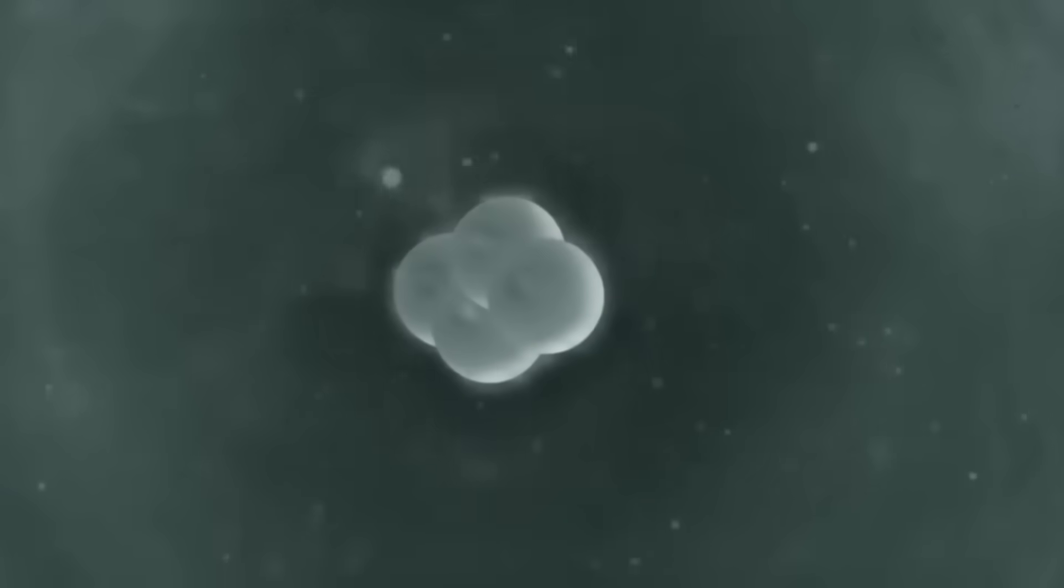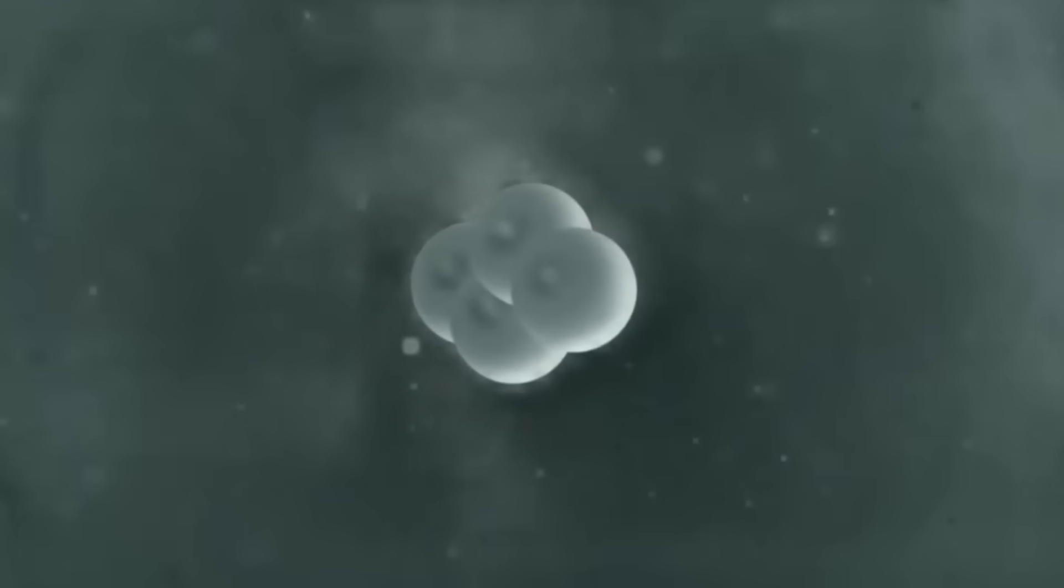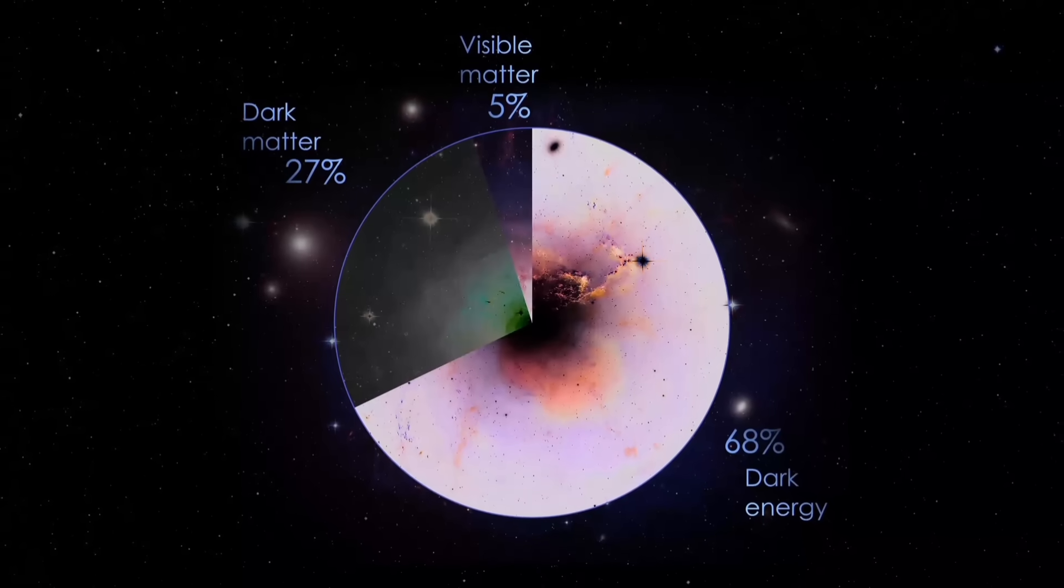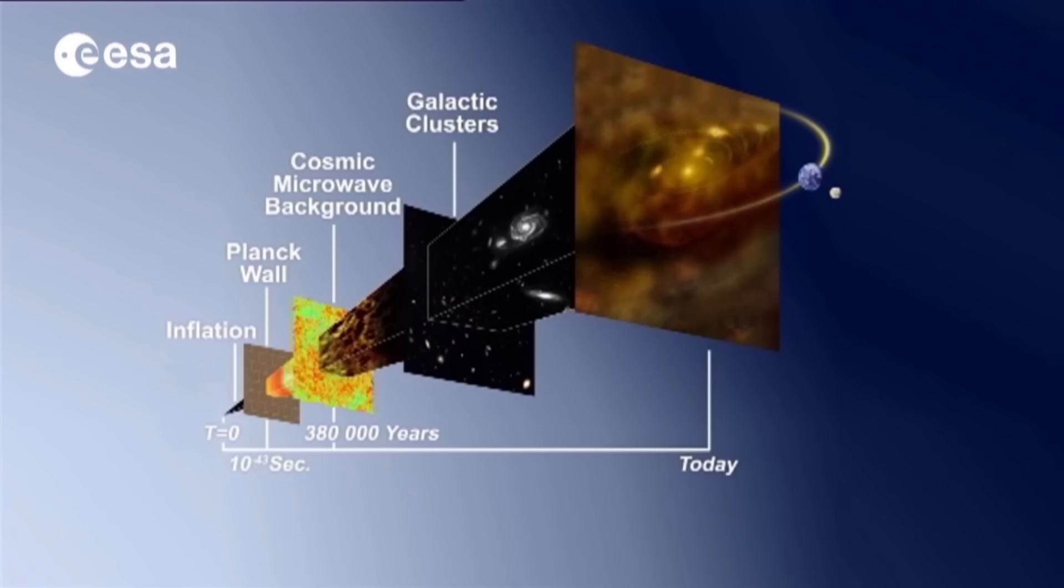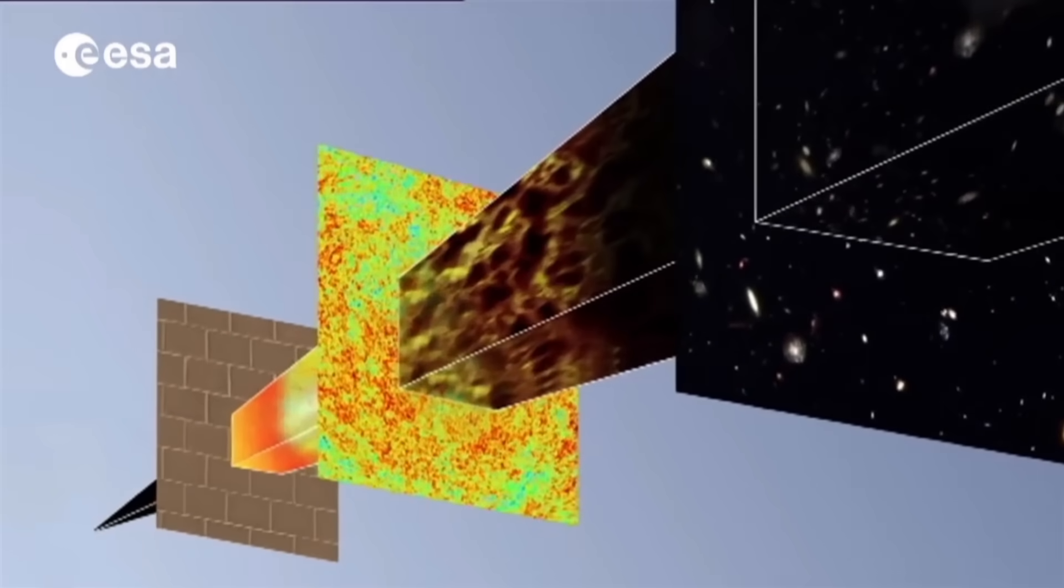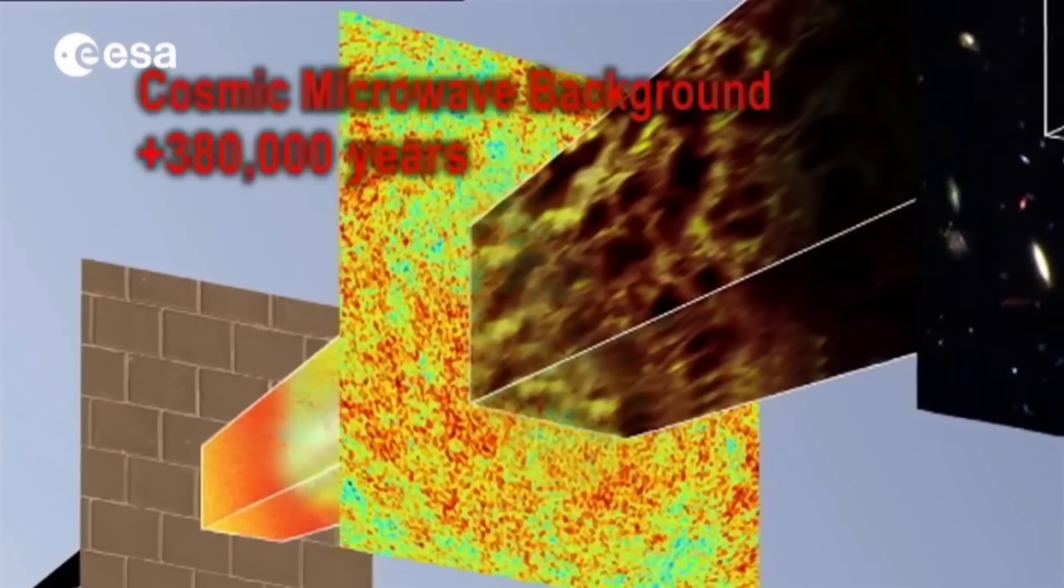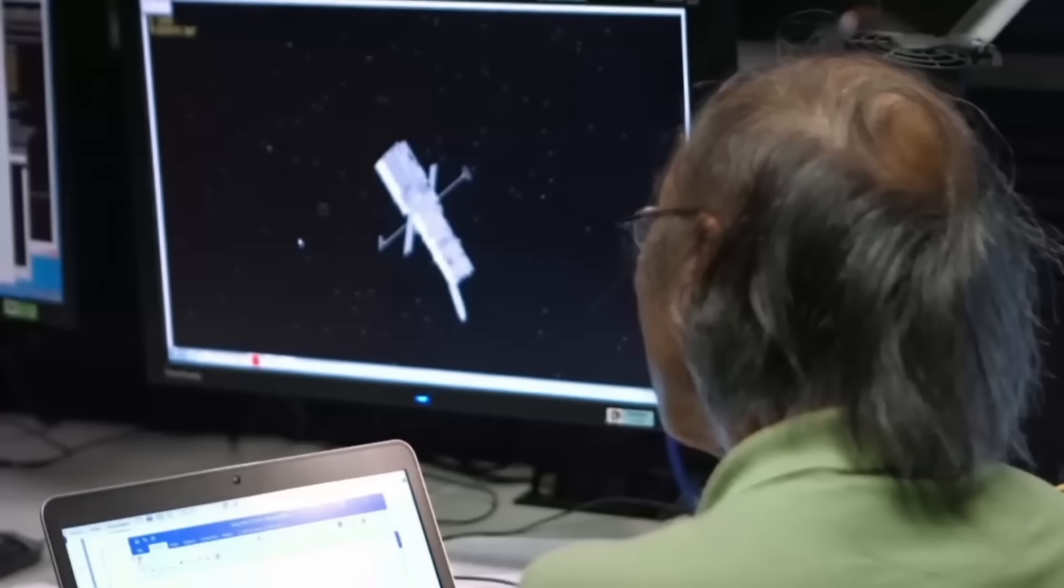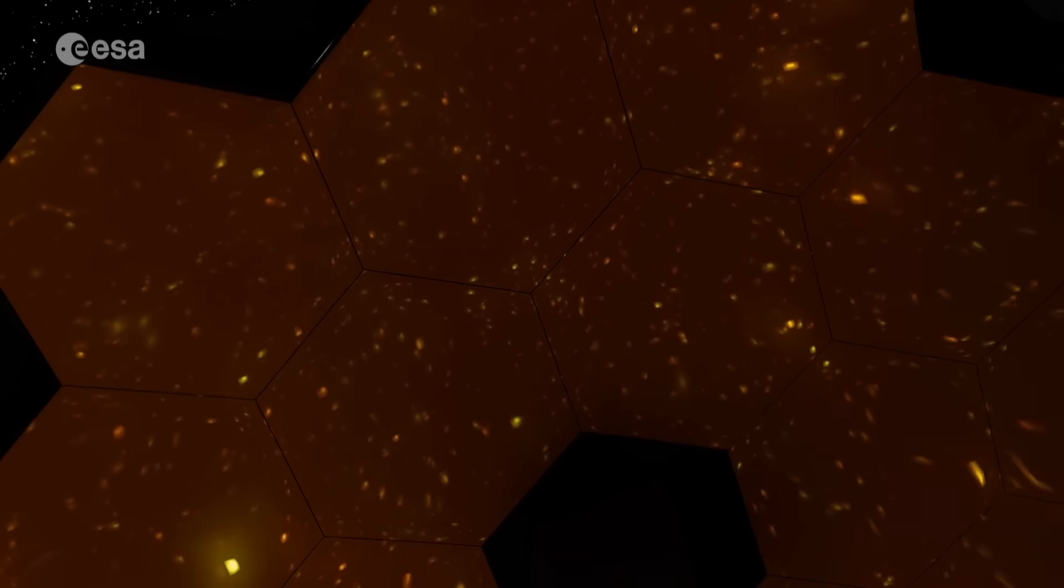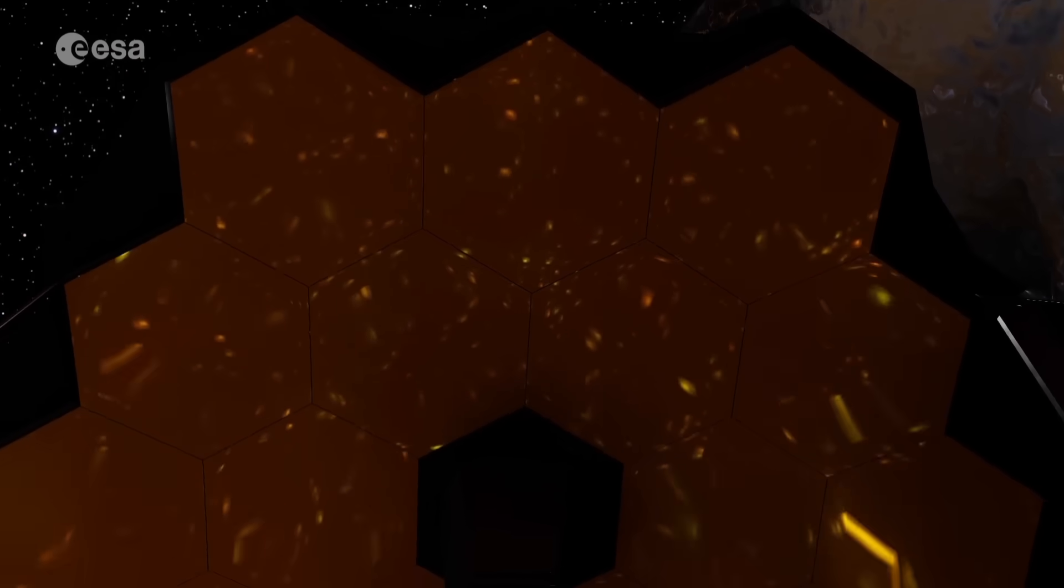All these discoveries made by the James Webb Space Telescope are challenging our fundamental understanding of the universe and how it began. From dark matter and dark energy to the most important evidence supporting the Big Bang, the cosmic microwave background radiation, everything is now being questioned. These findings suggest that we might be missing a major piece of the cosmic puzzle, or that the universe is completely different from what we've always believed.